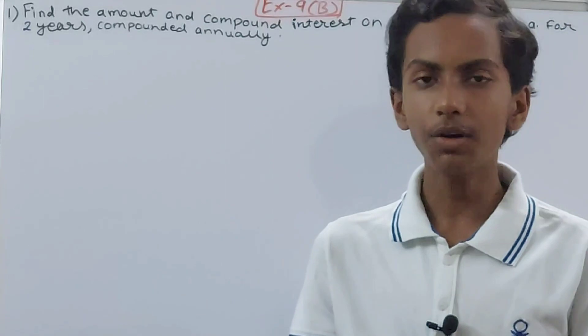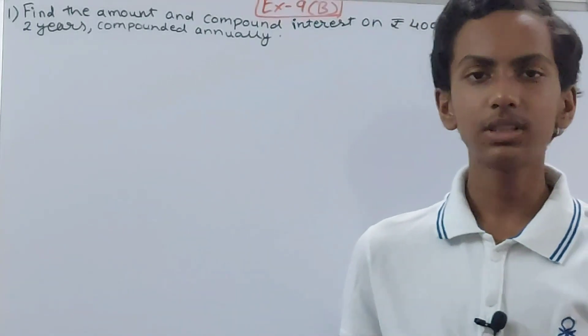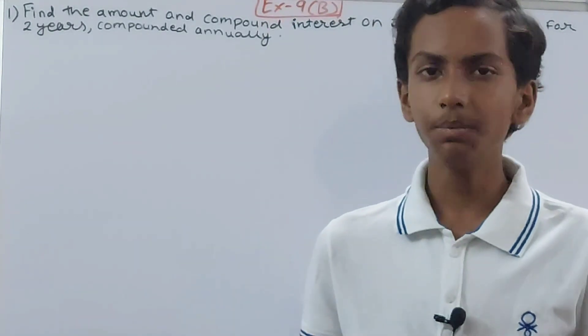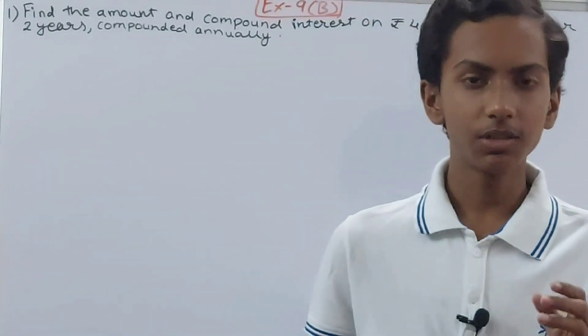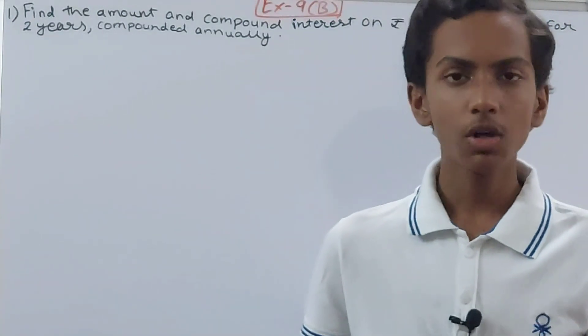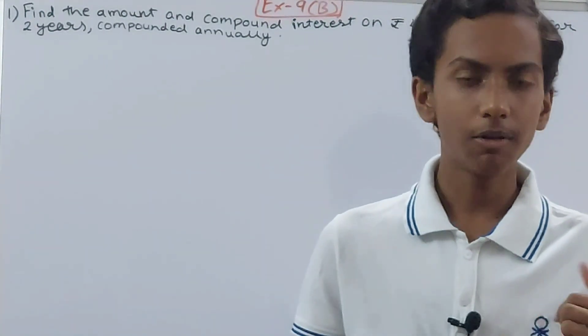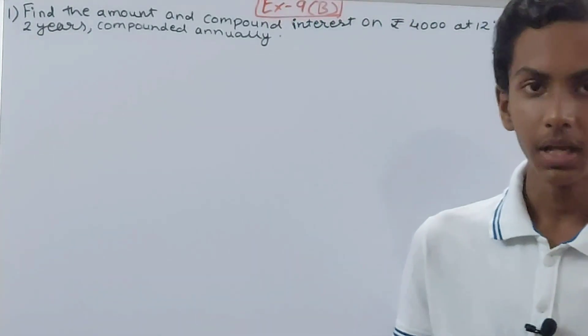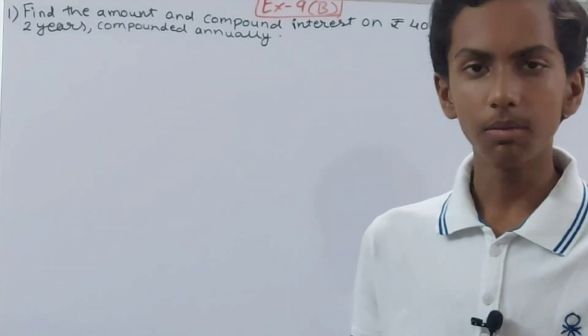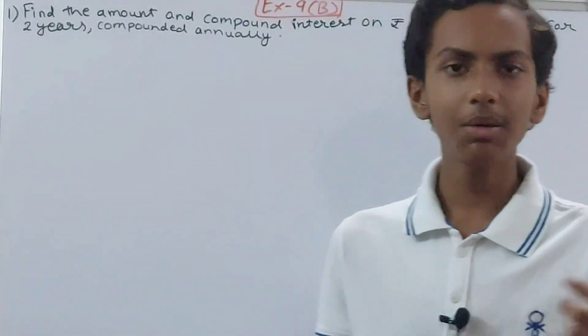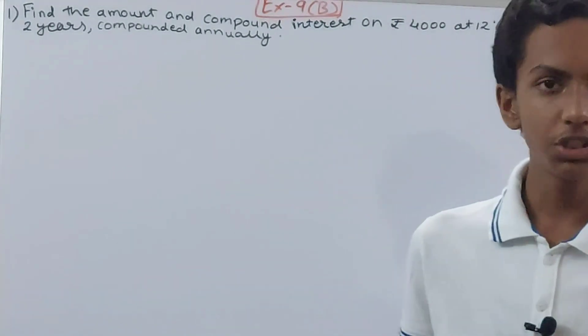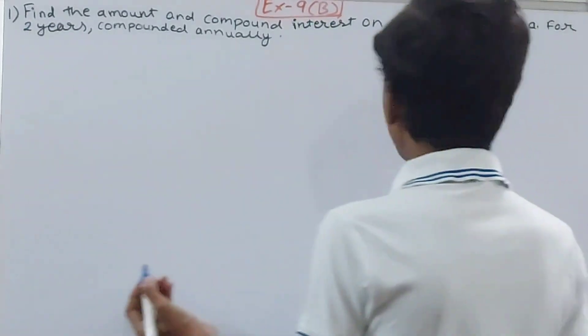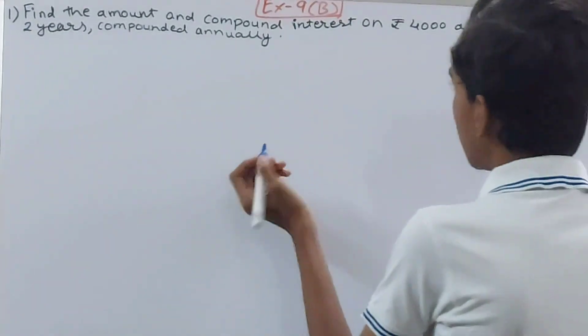Now here a new concept has come—that is compound interest. So far we have studied simple interest, in which we calculated interest on the same principle for all the years. If I have rupees 100, the interest for the first year—the principle will be 100, and for two years the principle will still be 100. But here some things change in compound interest. It is just the same as simple interest, but the principle keeps on changing every year if it is compounded annually.